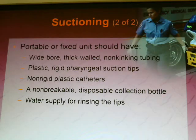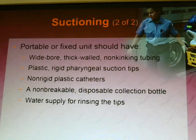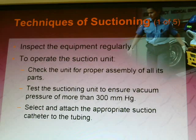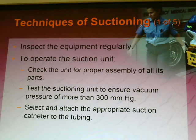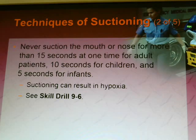The suction tip will be a plastic rigid pharyngeal suction tip. You'll also need a non-breakable disposable collection bottle and a water supply for rinsing the tips. Test the suction unit to ensure vacuum pressure is more than 300 millimeters of mercury. Select and attach the appropriate suction catheter to tubing. Never suction the mouth or nose for more than 15 seconds at one time for an adult patient, 10 seconds for children, or 5 seconds for infants.